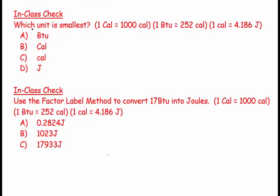This question asks which unit is smallest: the BTU (British thermal unit), the Cal (calorie with a big C, sometimes called a food calorie), the cal (calorie with a little c), or the J (Joule). We have some conversion factors which you don't have to remember but you have to be able to manipulate.